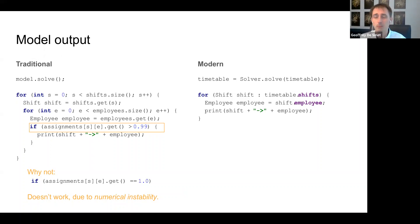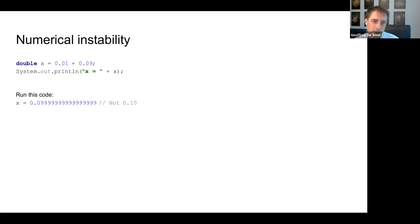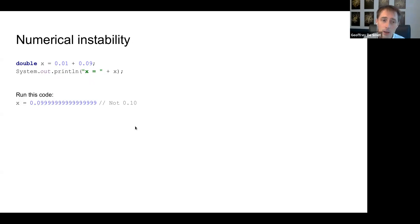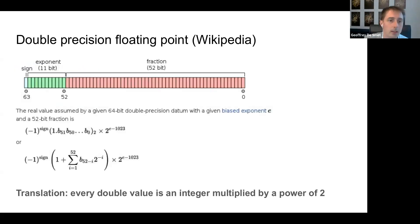Numerical instability is something that plagues many traditional solvers and which modern solvers rarely have to worry about. When you do 0.01 + 0.09 as 64-bit floating point doubles — in Java or any language — you don't get 0.10. You get 0.09999999... This is numerical instability: rounding errors that occur during floating-point arithmetic.